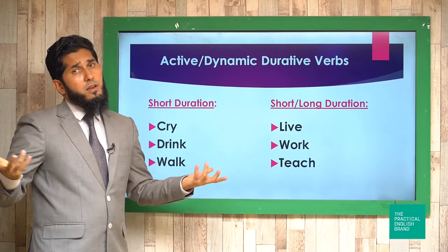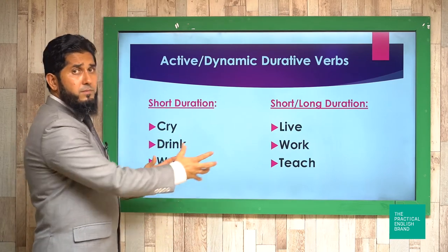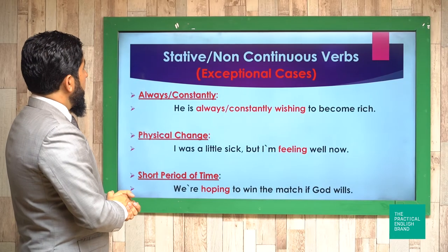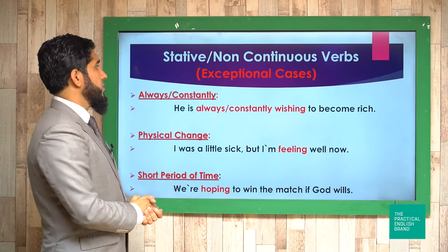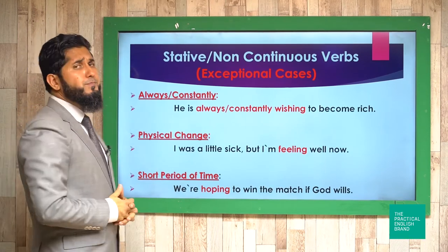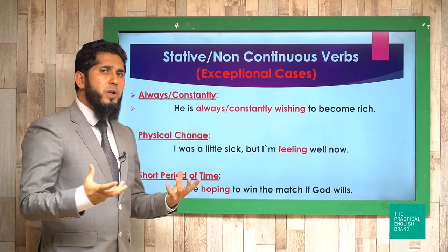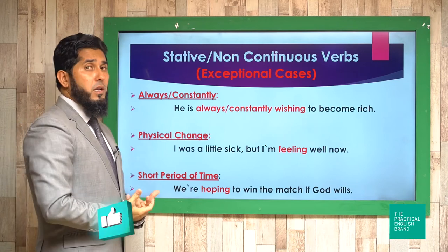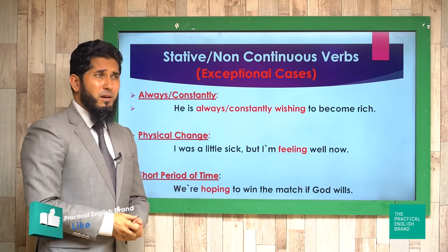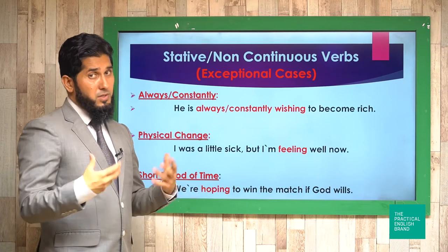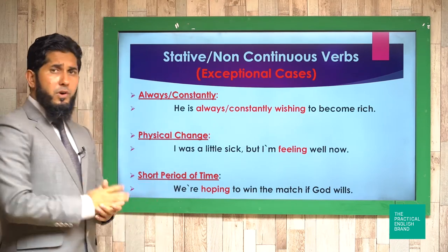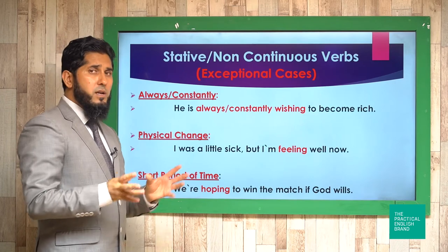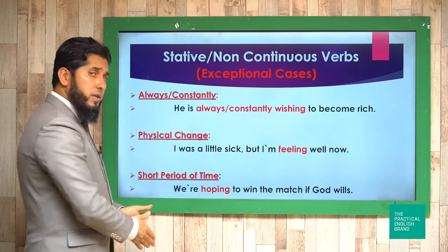The first group of verbs can only be used while mentioning a short duration. There are many more such verbs — I've just brought a few to clarify the concept. Now, stative or non-continuous verbs have some exceptional cases. Most commonly, we do not use stative or non-continuous verbs in continuous tenses, but there are three common exceptional cases where it is acceptable.